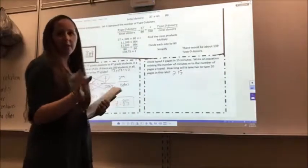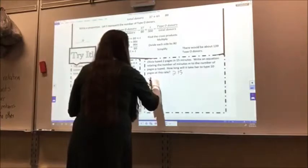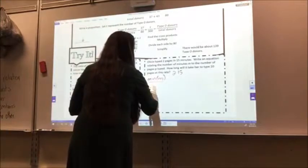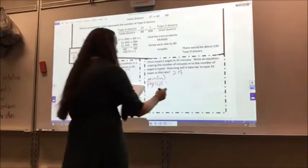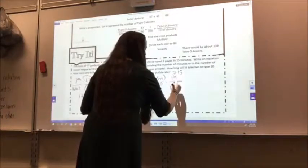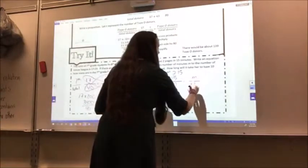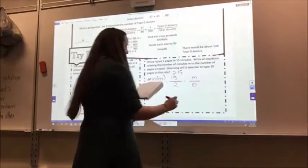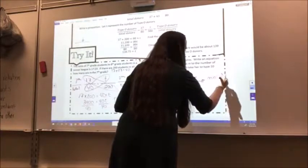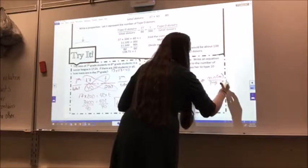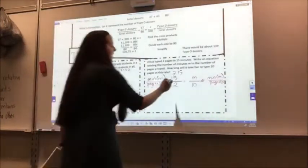So when I set this up, I have minutes m over pages p equals 15 minutes over two pages. I want to know how many minutes for 10 pages. For 10 pages, so again this is minutes over pages. So everything is labeled. I know where everything goes. Then I can go ahead and multiply by the butterfly.